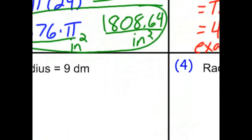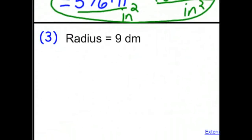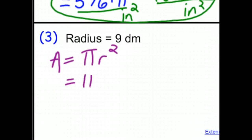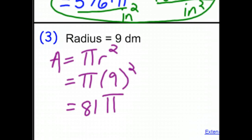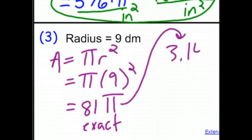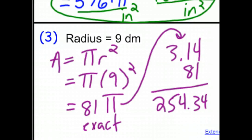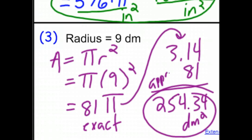Moving on to number three — the radius is 9 decimeters. Area equals π r squared. Pi remains as it is for now; the radius is 9, and 9 squared is 81. So the area is 81π — the exact number. For the approximation we multiply 3.14 by 81, and we end up with 254.34 decimeters squared. That is the approximate value; 81π is the exact value.